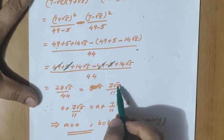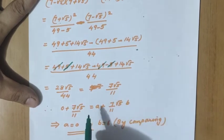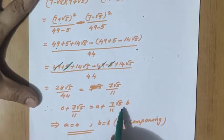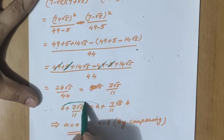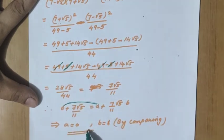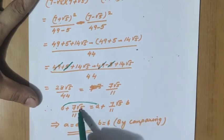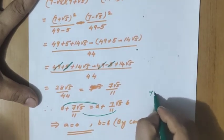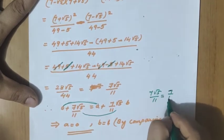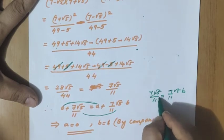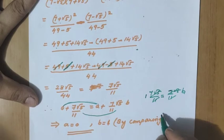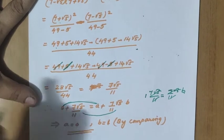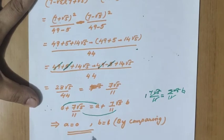So we calculated the left-hand side as 7 root 5 by 11. Now compare with the right-hand side: 0 plus 7 root 5 by 11 equals A plus 7 by 11 root 5 times B. In place of A, the value is 0, so A equals 0. Comparing the second term: 7 root 5 by 11 equals 7 by 11 root 5 times B. Everything cancels, giving B equals 1. Final answer: A equals 0 and B equals 1.